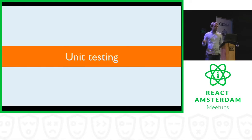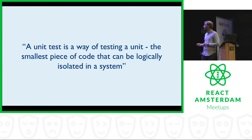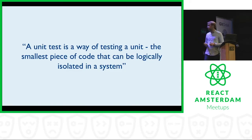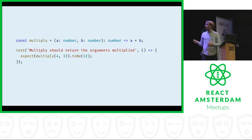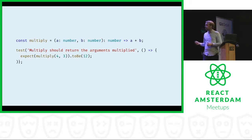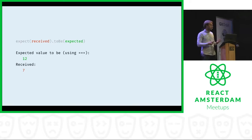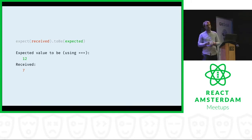Who writes unit tests for their code? Quite a lot — that's nice. A unit test is a way of testing a unit — the smallest piece of code that can be logically isolated in a system. More simply, it's testing whether a function does what it should be doing. Here I have the multiply function, still doing the wrong thing with addition, and I've written a simple test using Jest — but any framework can do this. I expect a multiplication of four and three to be 12. If you run it in Jest, you'll see it expected 12, but it returned seven because of the addition, and it tells you to go fix it.